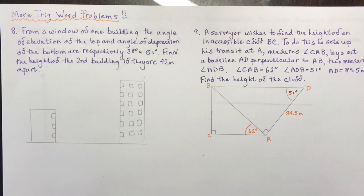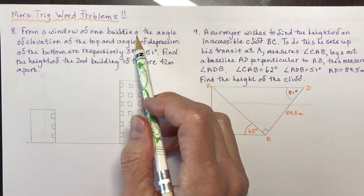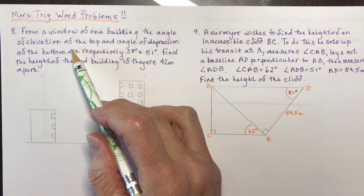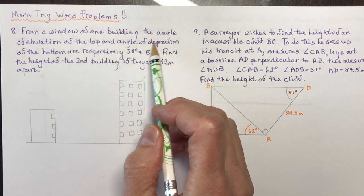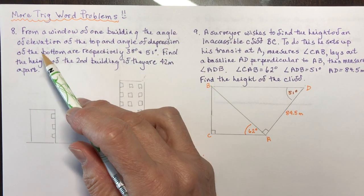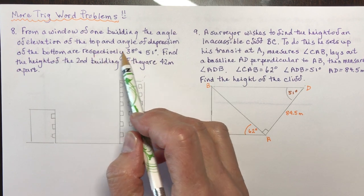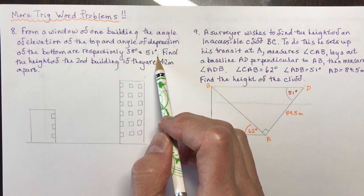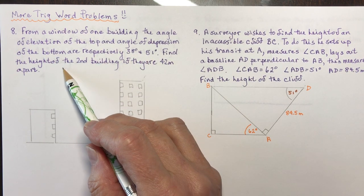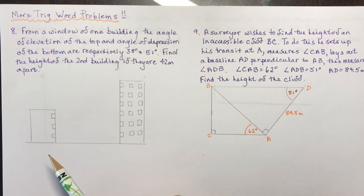From a window of one building, the angle of elevation of the top and angle of depression of the bottom are respectively 38 degrees and 51 degrees. Find the height of the second building if they are 42 meters apart.